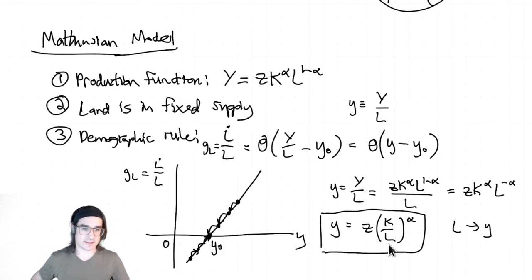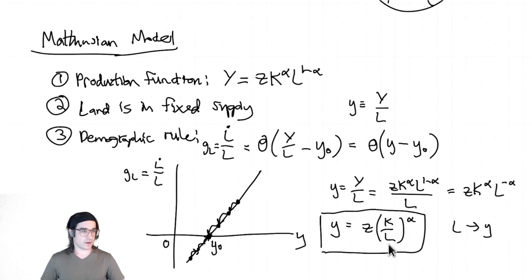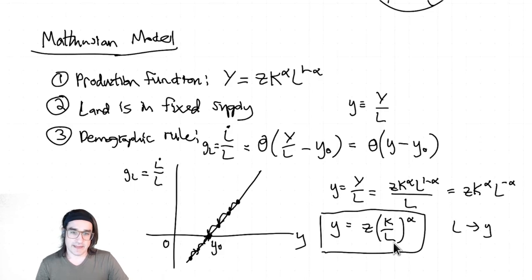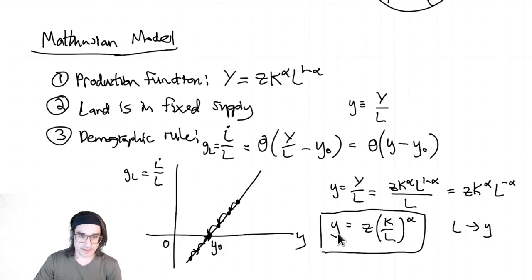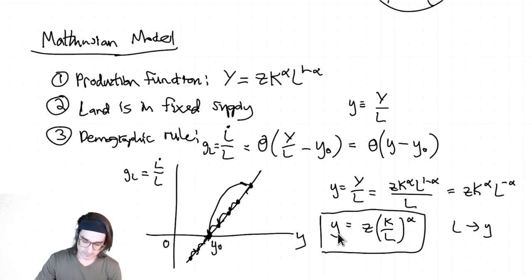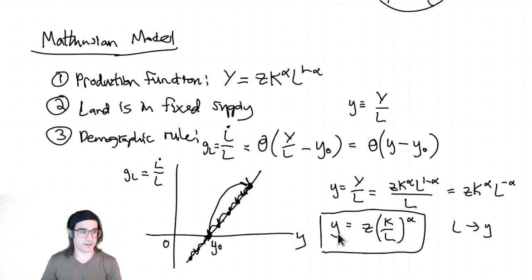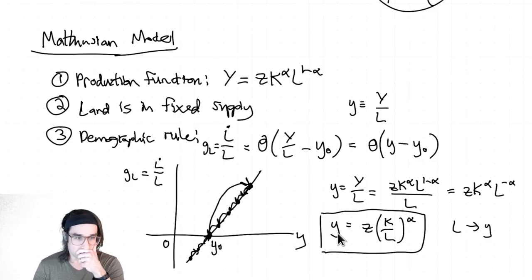A relevant shock to L is the Black Death — the plague around 1300 — which killed about a third of the European population. That's a massive negative shock to L, which in this model means Y would go up. You were going along at Y-zero, then the Black Death occurs, L goes down, Y jumps up — that's the short-run jump. But in the long run, the same logic applies: population recovers and you get back to Y-zero. That's an example of a short-run shock and long-run recovery.